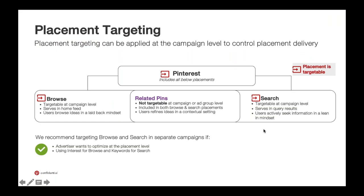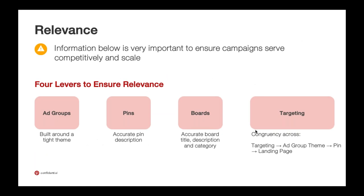There are two swim lanes for ads on Pinterest: search on the right side and browse, which I call home feed. Browse is more intent-driven based on behaviors you've expressed. Search is going to be a little more actionable, lower in the consideration funnel because they're searching for something implicitly. Our ads manager allows you to target ads in both swim lanes separately, or target into both with one ad group to see what works — our system can help figure that out automatically.